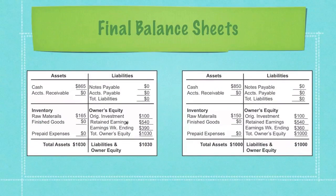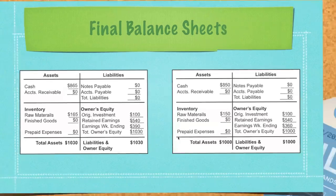Here are the final balance sheets and you can see the differences between first in first out and last in first out, and how it affects the earnings — which would be a difference of $30 that you wouldn't have to pay taxes on.